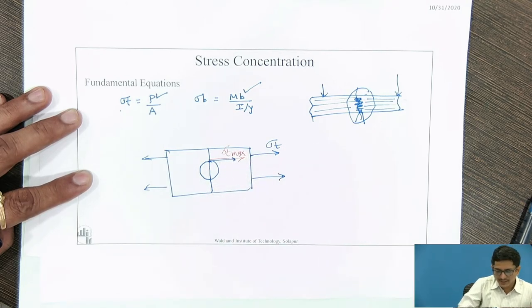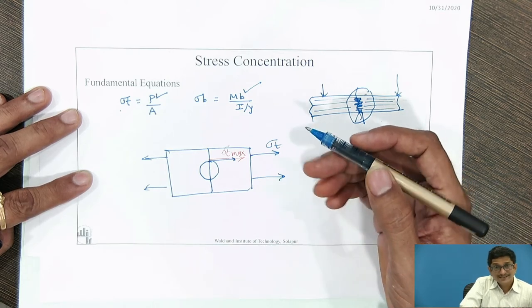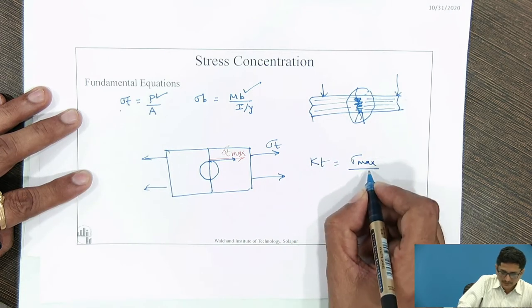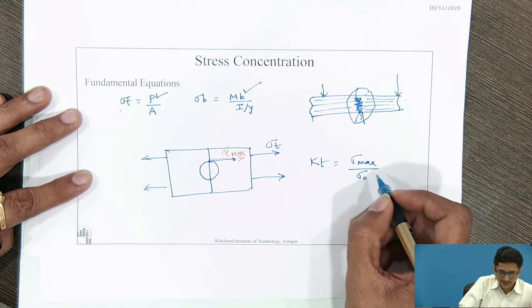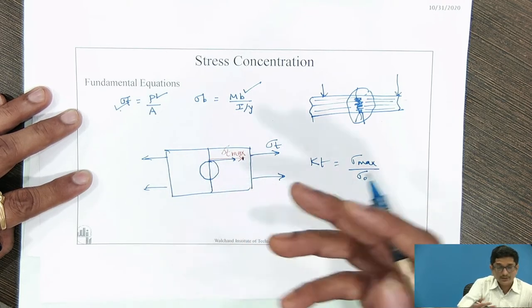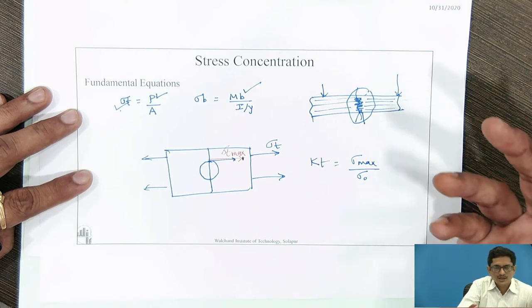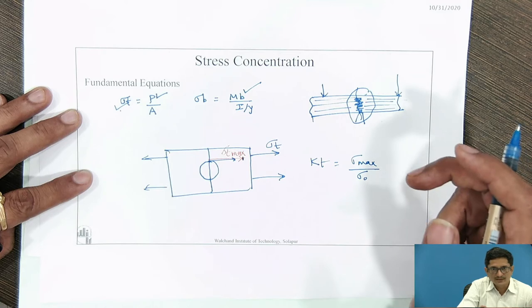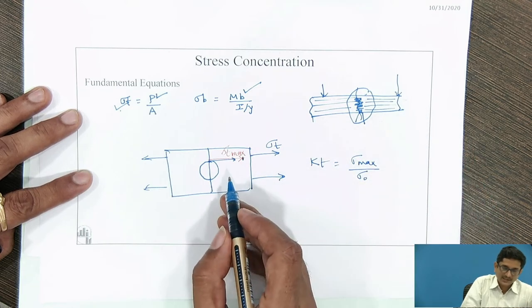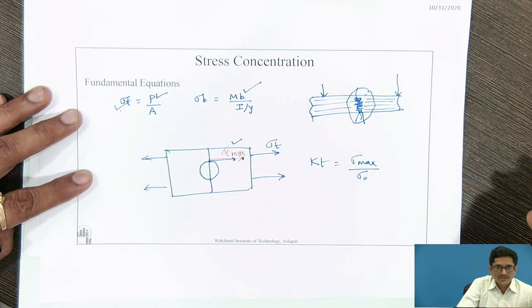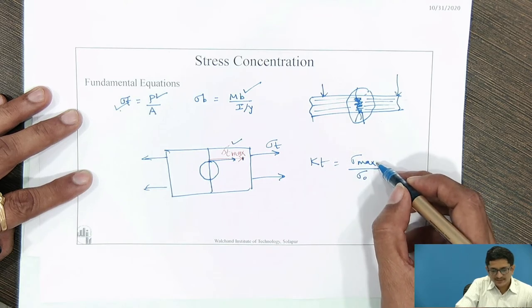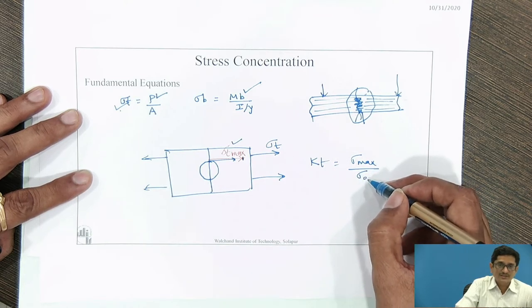There is a need to define the stress concentration factor. The stress concentration factor is defined as Kt. Kt is given as sigma_max upon sigma_0. Sigma_0 is obtained by the nominal equation. R.R. Moore has used the photoelasticity method to obtain this Kt value by using sigma_max. Therefore, Kt is defined as the maximum stress at the discontinuity divided by the nominal stress obtained by the regular equations.